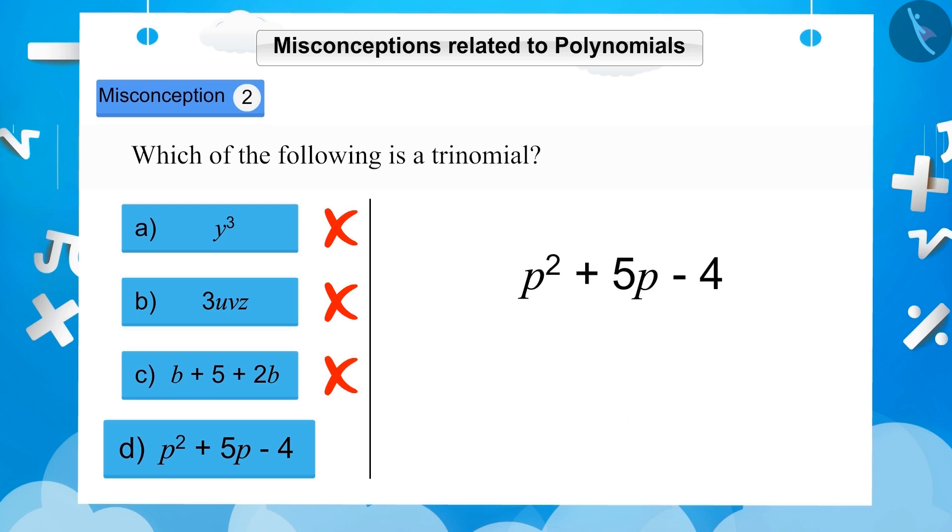d, p raised to 2 plus 5p minus 4. If you observe this option, you will find that this expression has three terms. This is a trinomial. Hence, option d will be the correct answer.